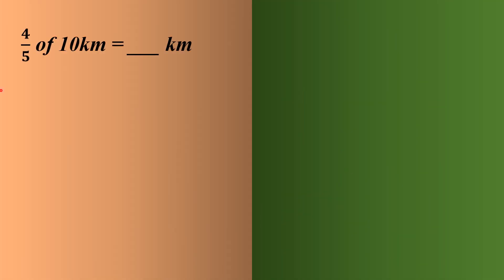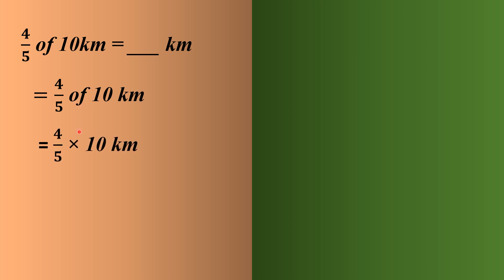Next question: 4/5 of 10 kilometers equals how many kilometers? We need to find the 4/5th part of 10 km. Since the answer is also in kilometers, no unit conversion is needed. We replace 'of' with multiply and solve: 4 into 10 by 5. Since 5 is the common factor, 10 and 5 both divide by 5, giving the final answer of 8 kilometers.